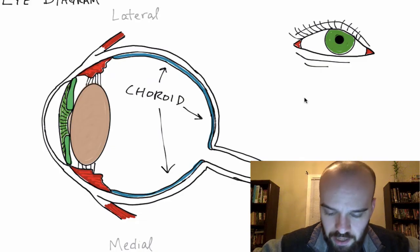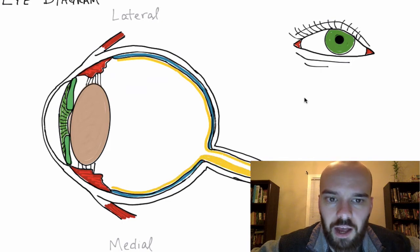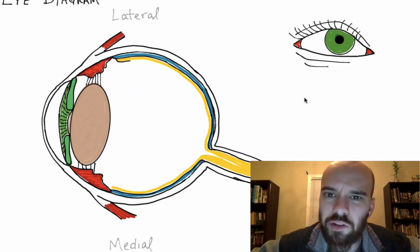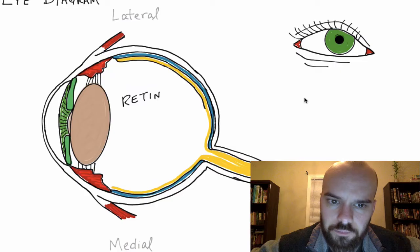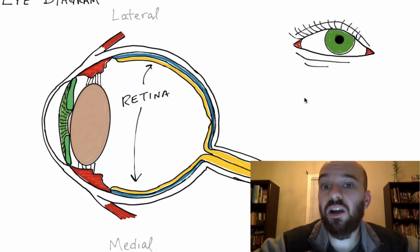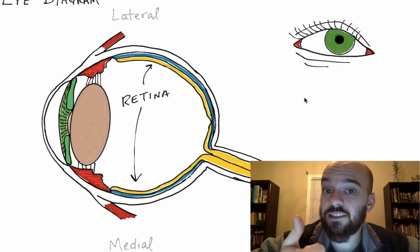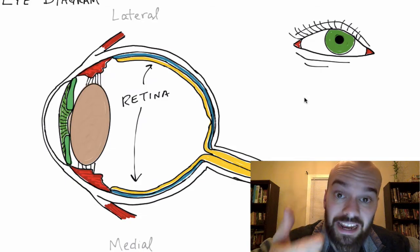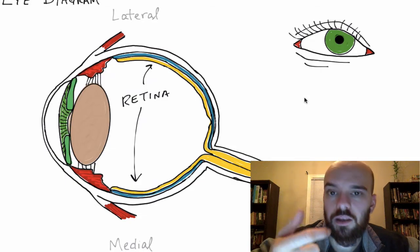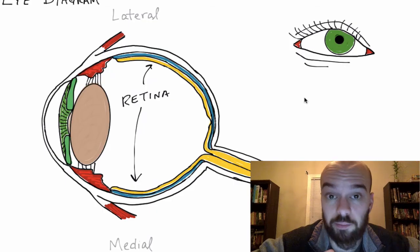I'm going to draw the retina in yellow, and it's going to be along the back of the eye. It's a really thin and fragile layer, and that retina is going to contain cells that detect two things: they're going to detect light intensity — how bright something is — and they're going to detect the wavelength or color of that visible light.